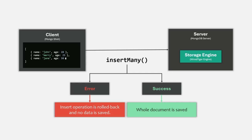We have also seen this behavior when we talked about ordered and unordered insertion. We can actually control atomicity on bulk inserts or bulk update operations, and we will learn how when we cover transactions and rollbacks in MongoDB.